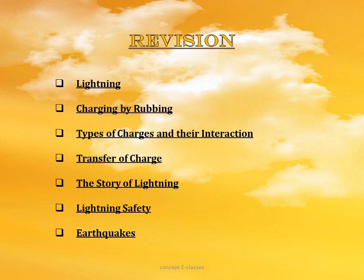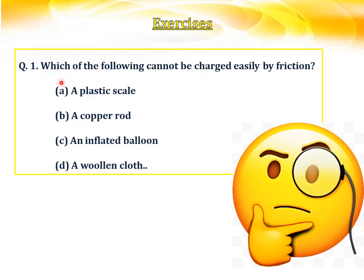Now let's enter into the exercises. Question number one: which of the following cannot be charged easily by friction? We have to point out which material cannot be charged by rubbing. The options are: a) a plastic scale, b) a copper rod, c) an inflated balloon, and d) a wooden club. Most of them are non-conducting materials and only copper rod is a conducting material. Non-conducting materials can be charged by friction, but copper rod, being a conducting material, cannot be charged by friction. Hence the answer is b) a copper rod.